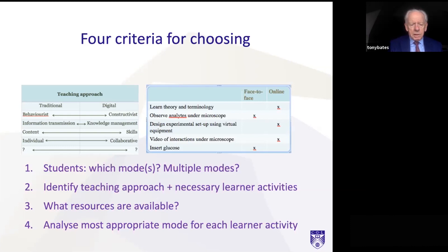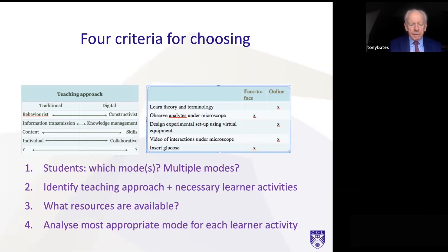The second criterion is identifying your teaching approach and the necessary learner activities to achieve the learning objectives of the course. On the right-hand side here, you can see I've taken a science course and broken down a unit of teaching as to what is best done face-to-face and what is best done online. One thing apparent from this is that there are no general rules — you have to look at every course and every context differently. The third criterion is what resources do you have available, such as access to an online high-speed microscope versus requiring students to come to campus to use one. Then you analyze the most appropriate mode for each learner activity within that context.